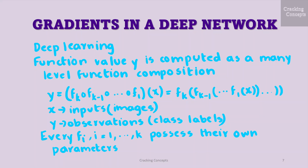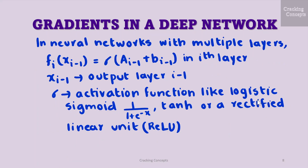Now we look into gradients in a deep network. An area where the chain rule is used to an extreme is that of deep learning, where the function value of y is composed as a many-level function composition: y given by fk composition fk-1 composition f1 of x, which can be written as fk of fk-1 of ... f1 of x. Here x are the inputs or the images, y are the observations or class labels, and every function fi, where i ranges from 1 to k, possesses its own parameters. In neural networks with multiple layers, we have functions fi of x i-1 which can be written as sigma of A i-1 plus b i-1 in the ith layer.